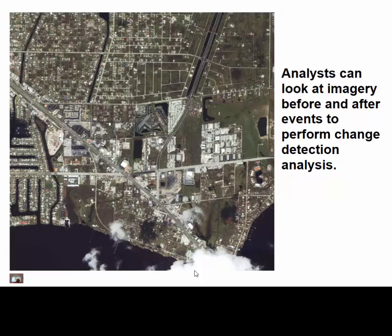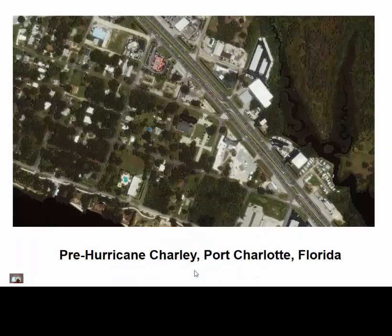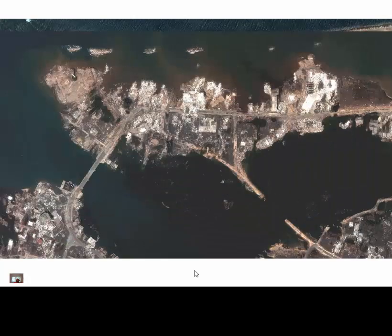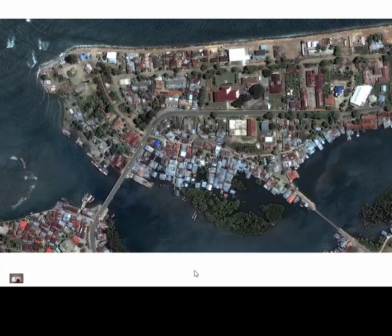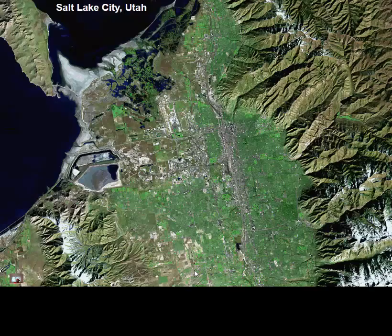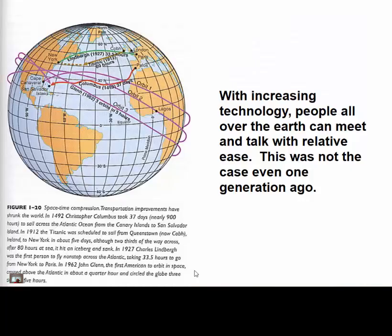Analysis can do something called change detection — looking at before and after. The great thing about drones is that you no longer need to rely on satellites or airplanes. This is Hurricane Charlie from the mid-2000s in Florida, before and after. This is the 2004 earthquake in Indonesia — before and after pictures. We can also use GIS with elevation data to create nice-looking 3D map renderings.